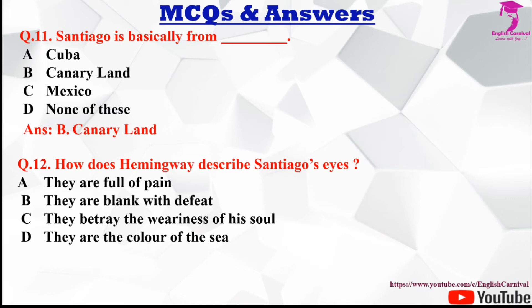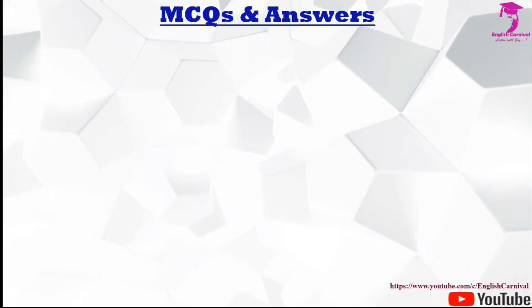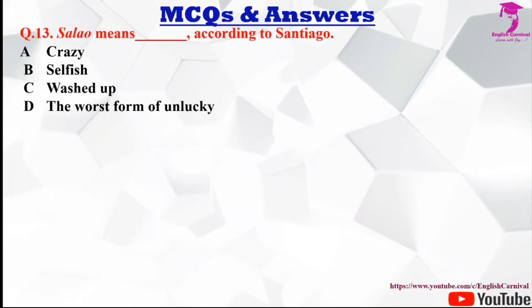Question number twelve: How does Hemingway describe Santiago's eyes? Options include A they are full of pain, B they are blank with defeat, C they betray the weariness of his soul, and D they are the color of the sea. The correct answer is D, they are the color of the sea.